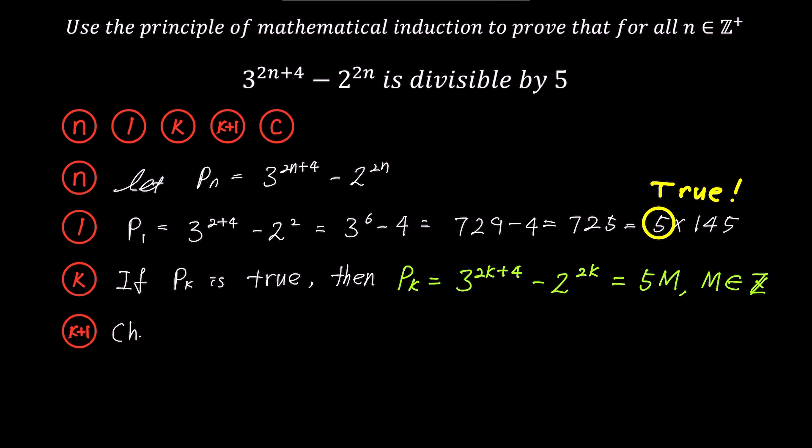With this assumption, let's move on to step 4 and check if the k plus 1 domino block denoted as pk plus 1 also falls. Using the expression we previously defined as pn, substituting k plus 1 for n, we obtain pk plus 1 equals 3 to the power of 2 times k plus 1 plus 4 minus 2 to the power of 2 times k plus 1, which can be further simplified to 3 to the power of 2k plus 4 plus 2 minus 2 to the power of 2k plus 2.